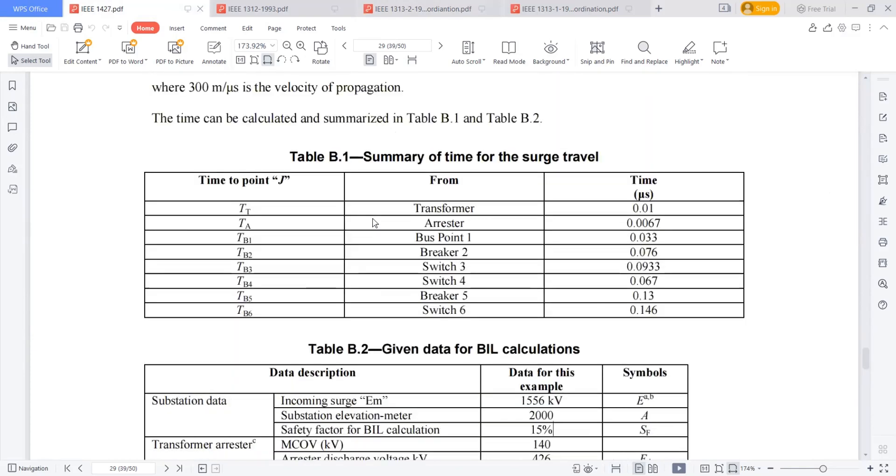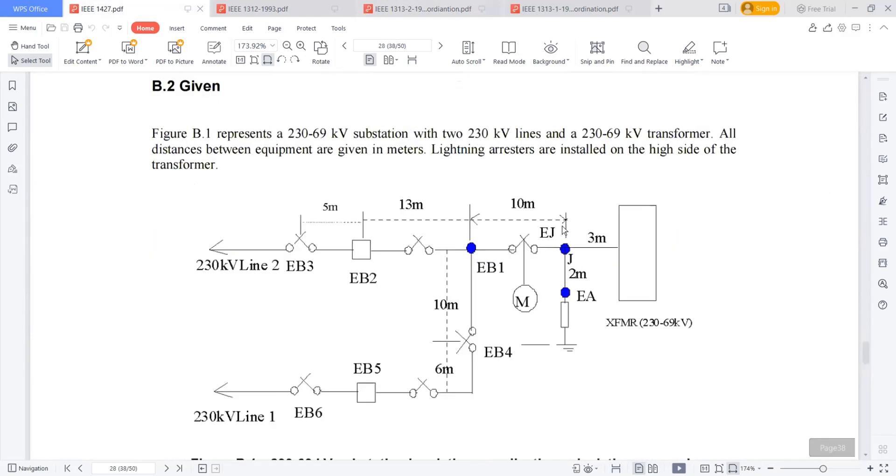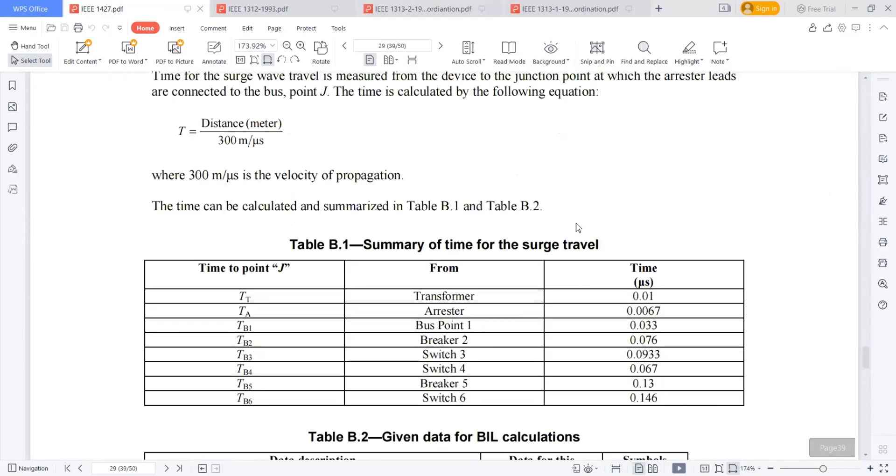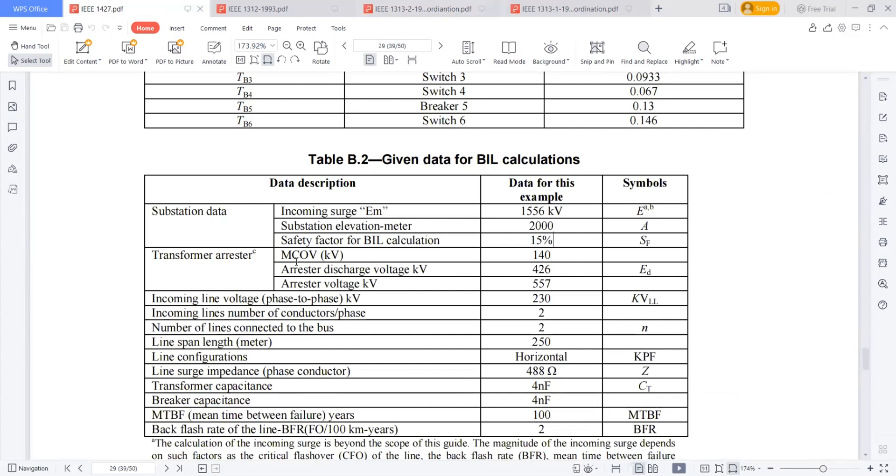The safety factor for BIL calculation generally we will consider 15% as a safety margin. The transformer arrestor, I am talking about the arrestor, which is a very important equipment playing a role here in this exercise. The transformer arrestor, the maximum continuous operating voltage of the arrestor, I considered 140 kV.